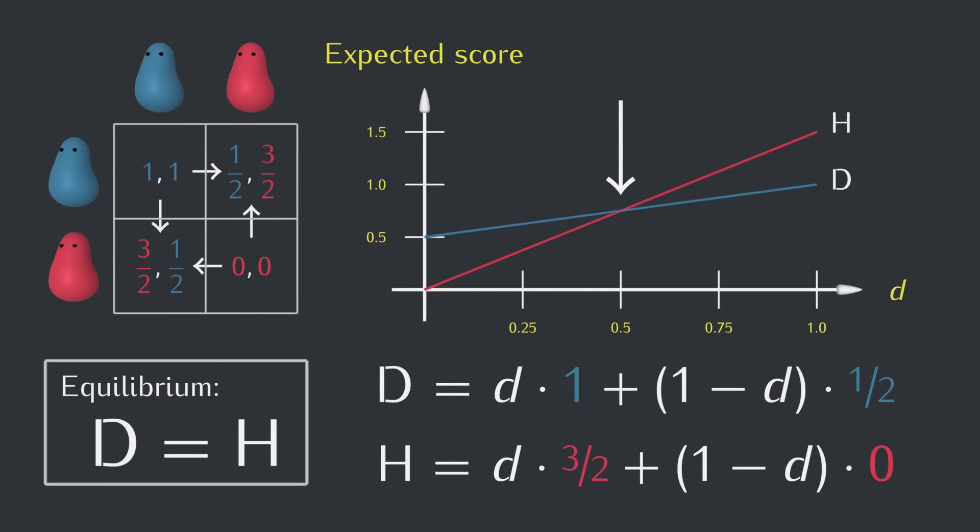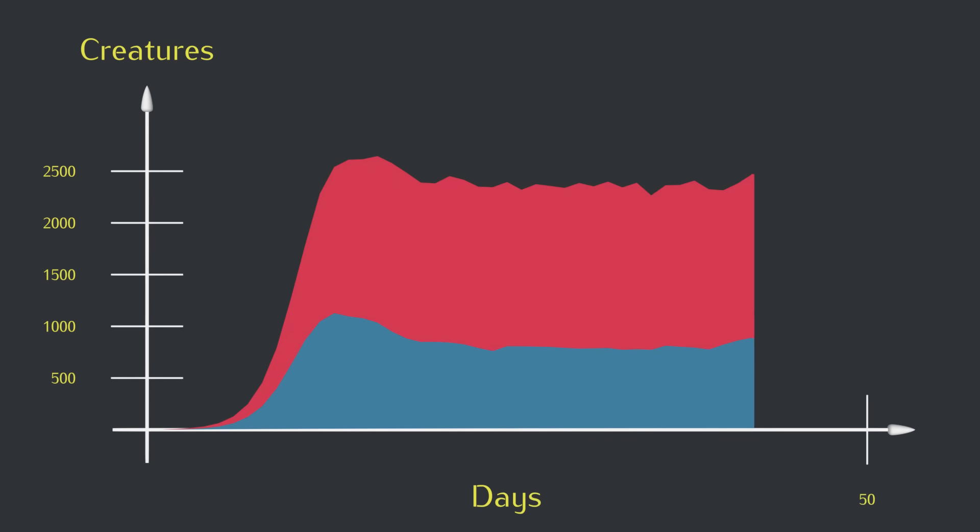But what if instead they only waste most of the energy, not all of it, and go home with a score of 1 fourth? Plugging that in, we see the population move toward 1 third doves. And again, we can see this borne out in the simulation.